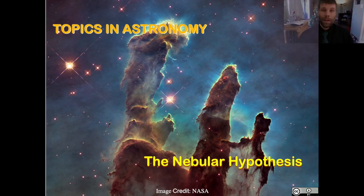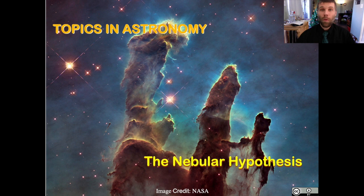Hi, I'm Professor David Attlee, and this is Topics in Astronomy. Thanks for joining me. In this video, we'll be talking about the nebular hypothesis, which is our idea for how planets form within our own solar system. We'll talk a little bit about some of the observational evidence about our solar system that motivates this hypothesis, and then run through the planet formation process itself. Let's get started.